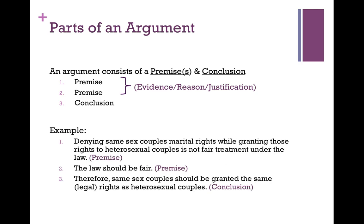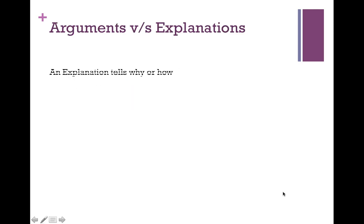Here's another example with two premises. Premise one: Denying same-sex couples marital rights while granting those rights to heterosexual couples is not fair treatment under the law. Premise two: The law should be fair. Conclusion: Therefore, same-sex couples should be granted the same legal rights as heterosexual couples. You may disagree with this argument, but what I want to show you is just the structure — premise, premise, conclusion. All arguments this semester will be placed in this form: we list the premises and then the conclusion at the end.